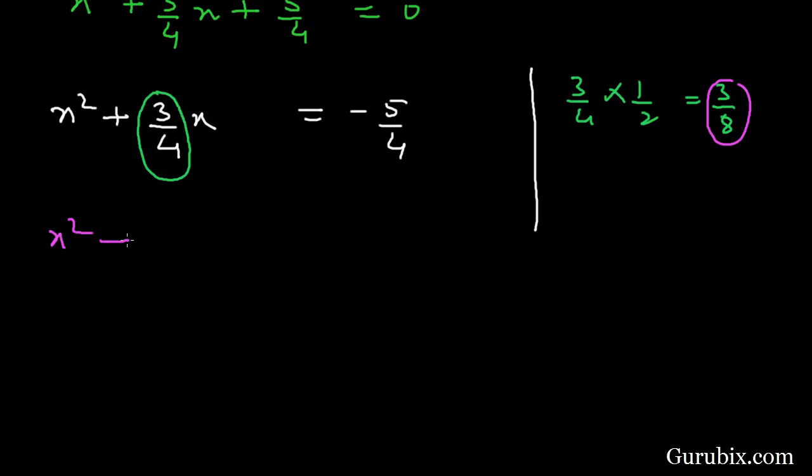Then we have x square plus 3 over 4x plus square of 3 over 8. This means minus 5 over 4 plus 3 over 8 square.